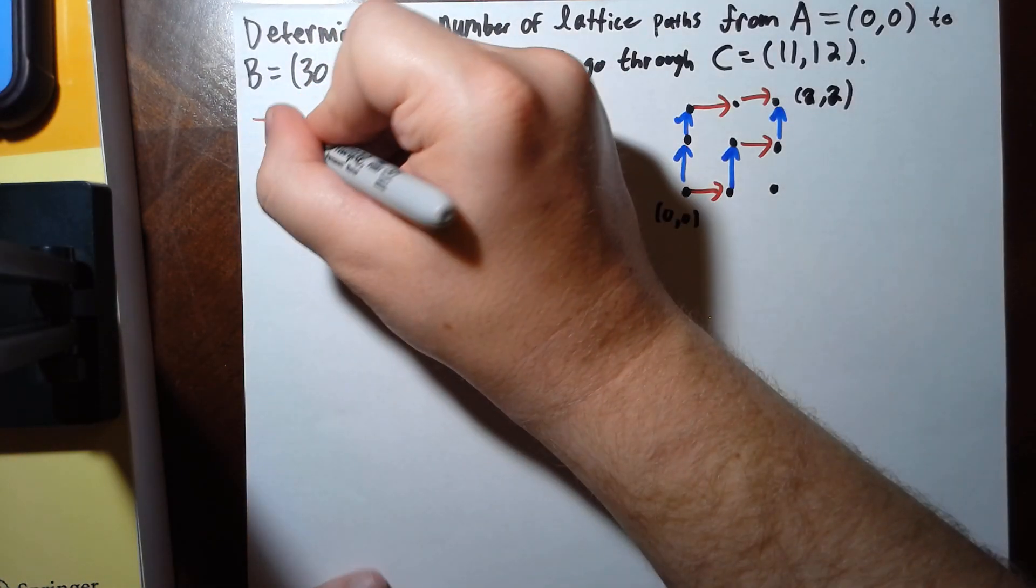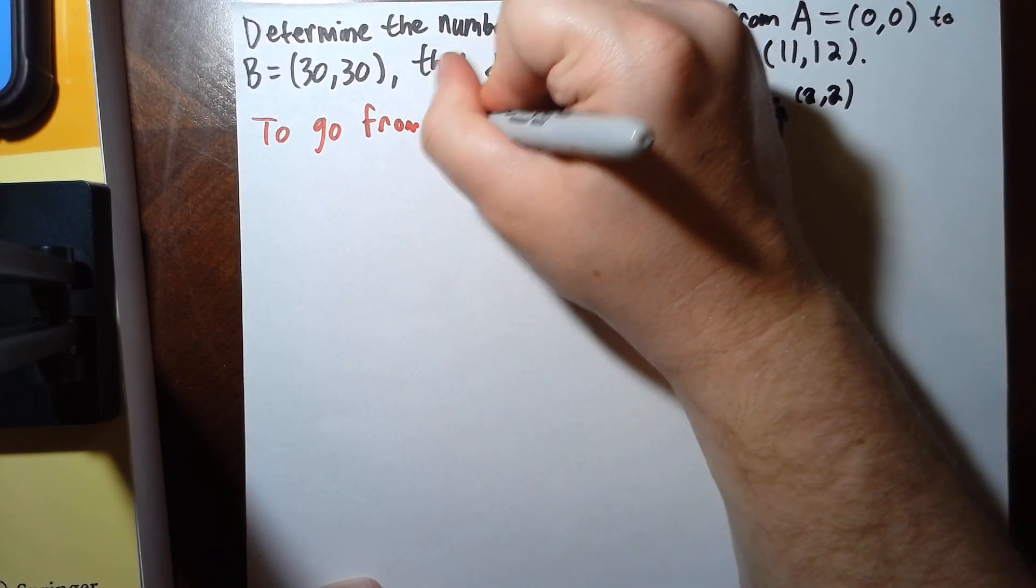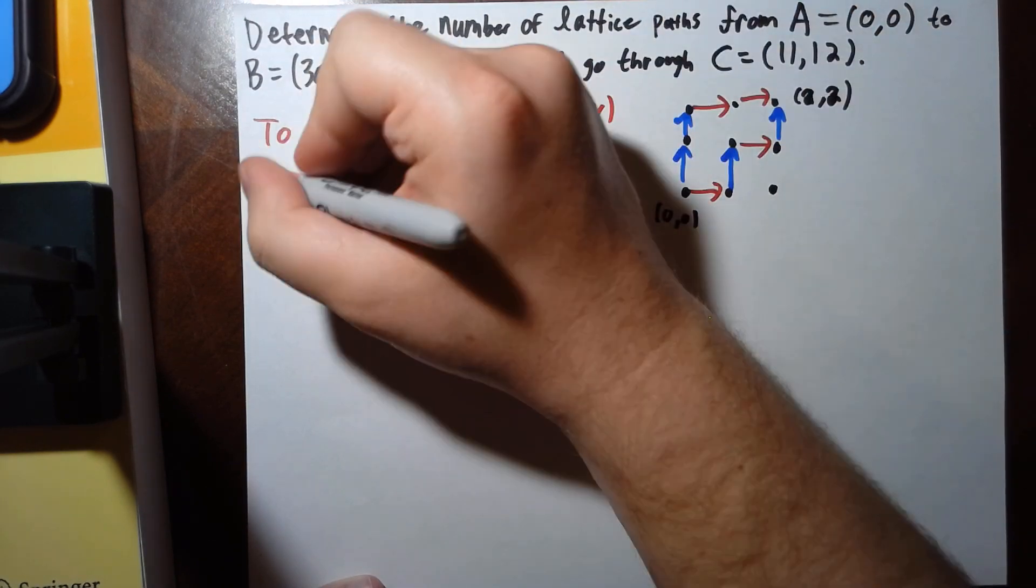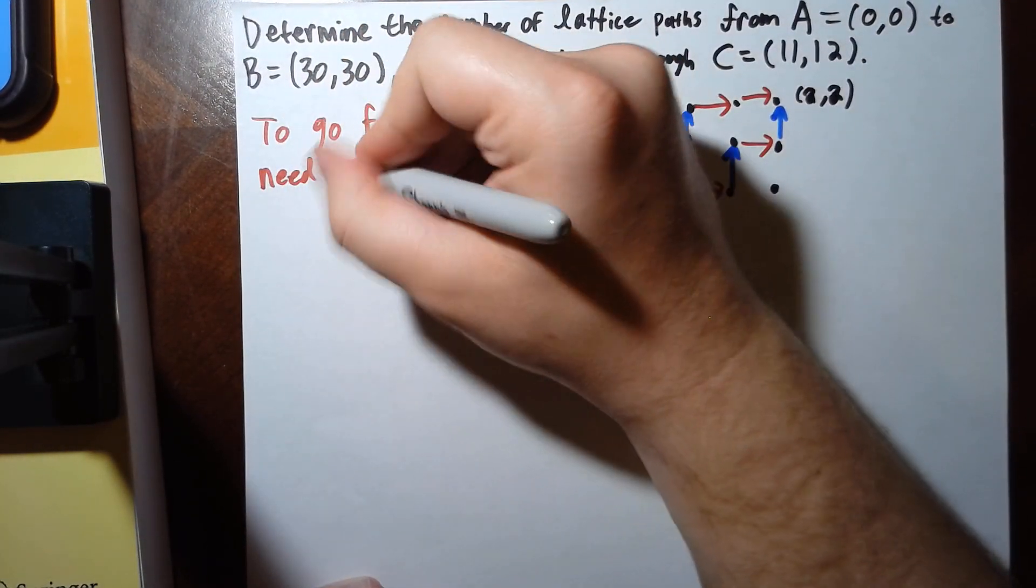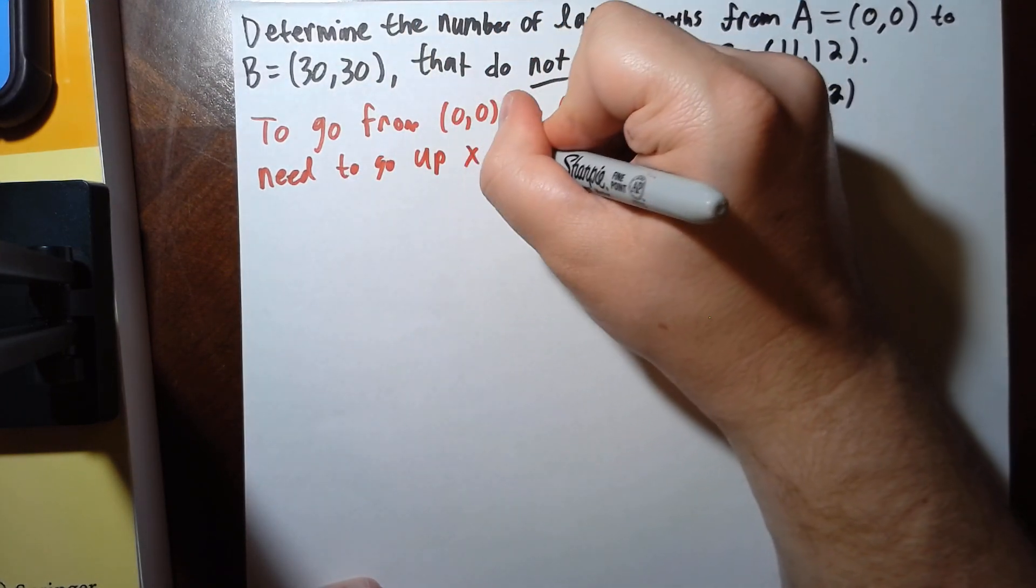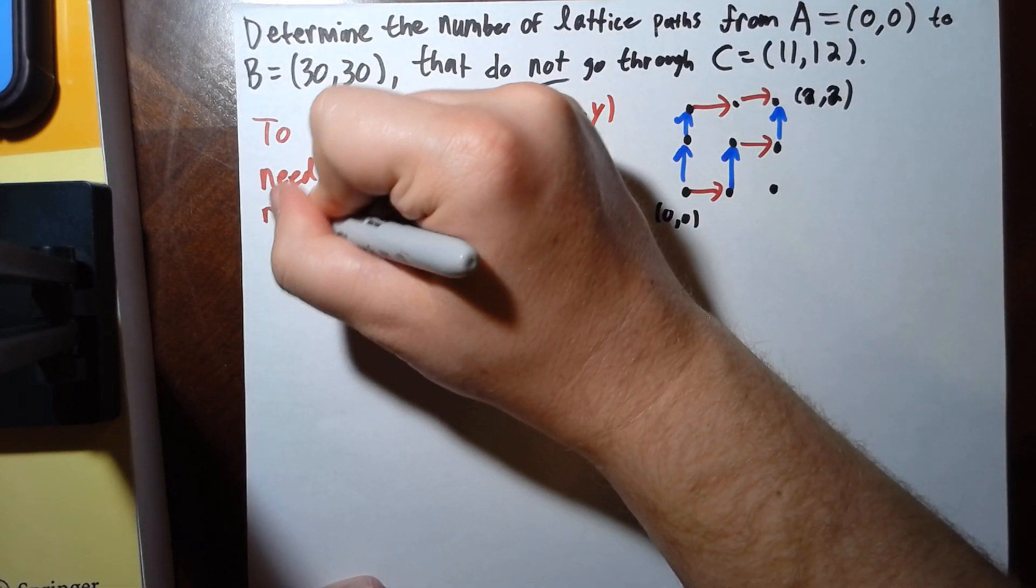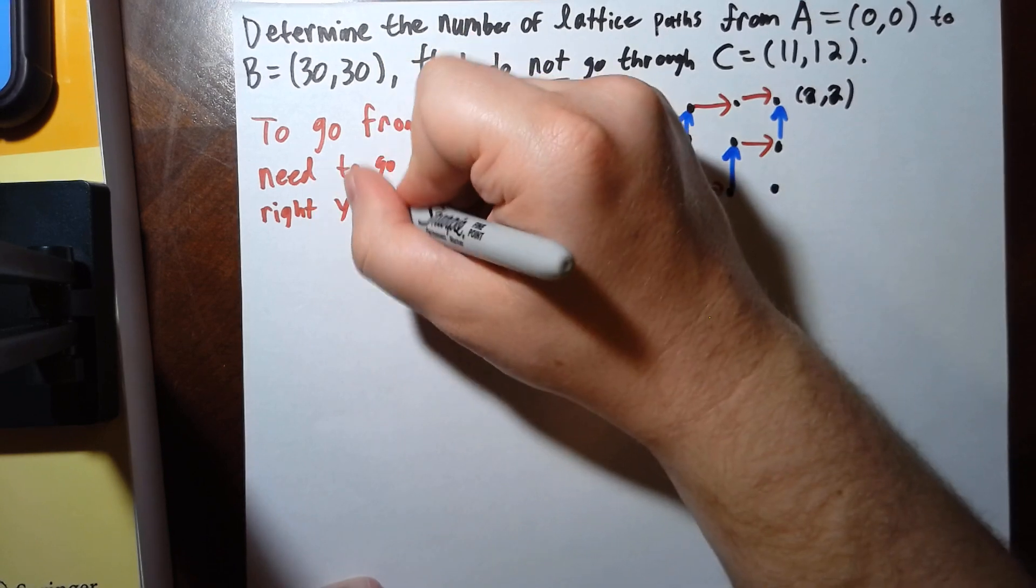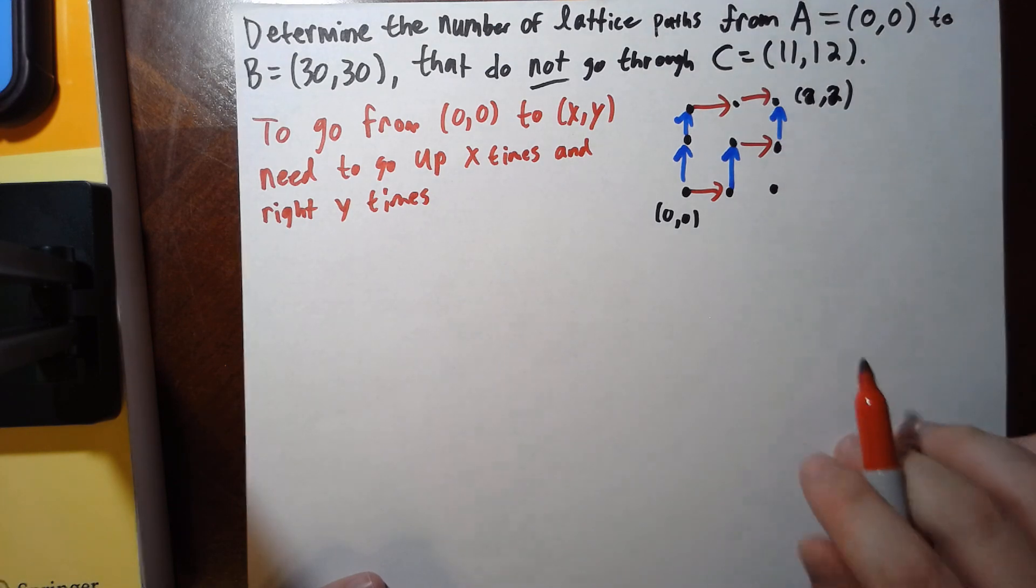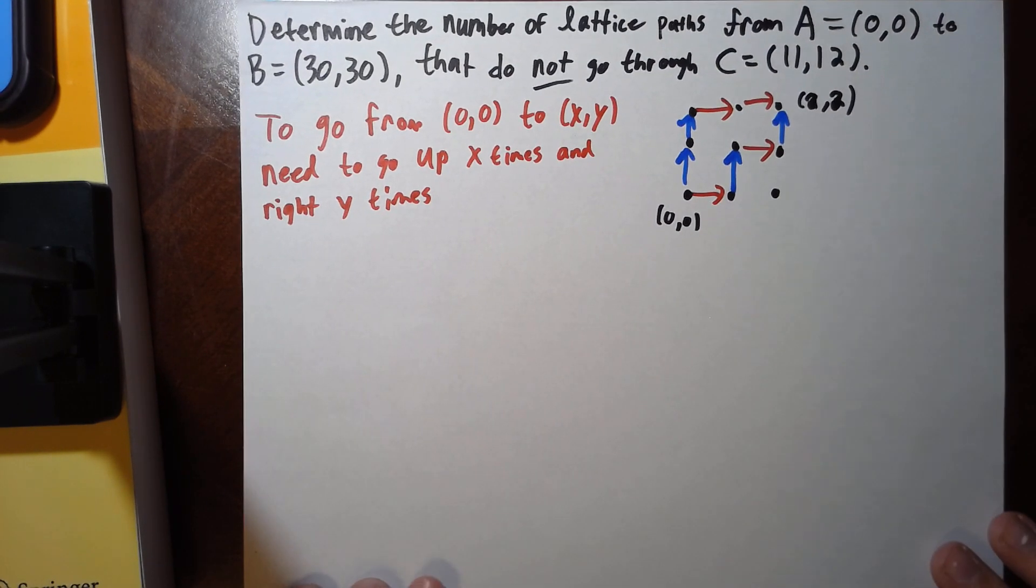So maybe to say, to go from (0,0) to (x,y) you need to go up x times and right y times. Of course, here I'm assuming we're only moving right and up—that's the assumption in these lattice path problems.